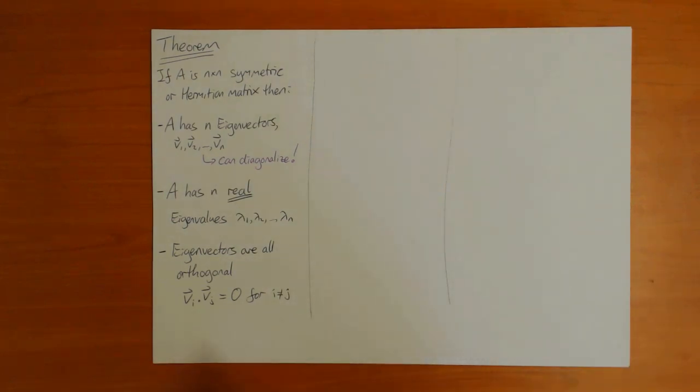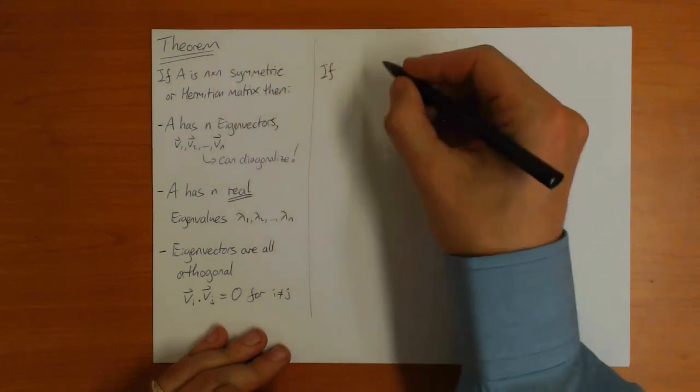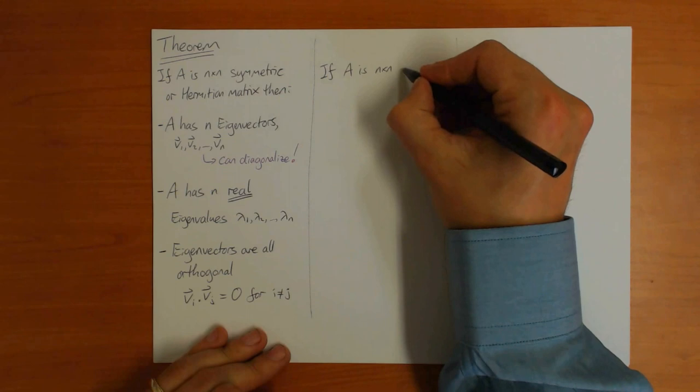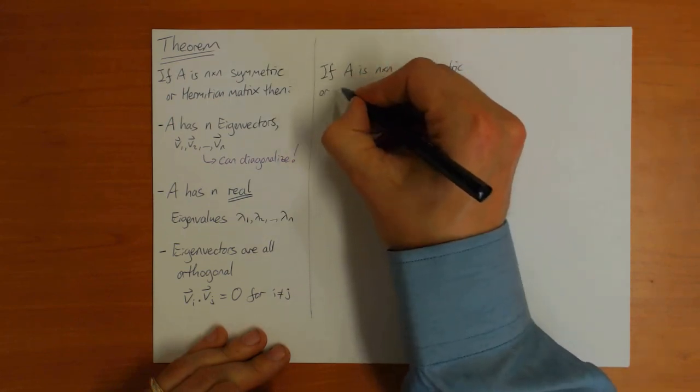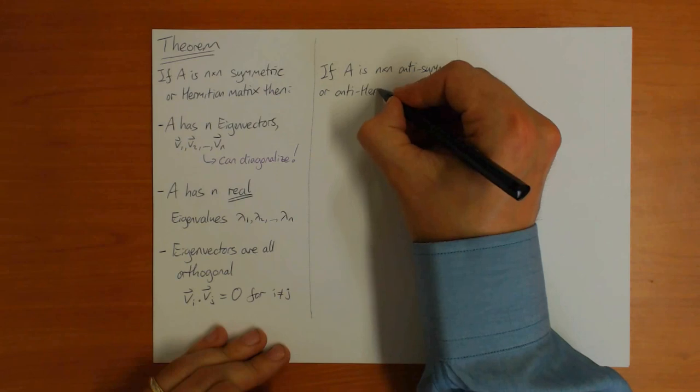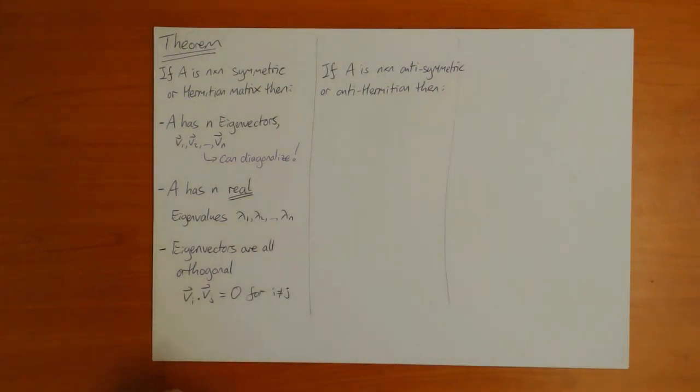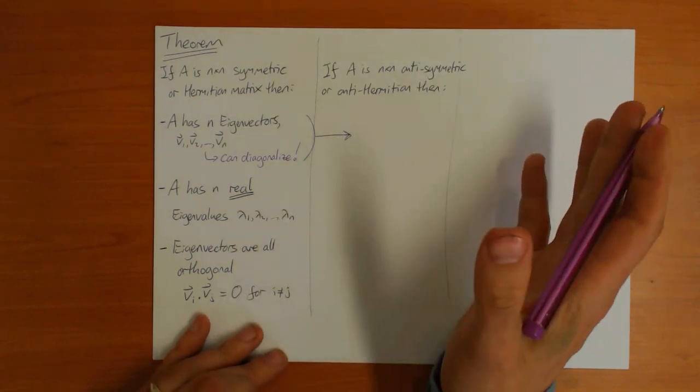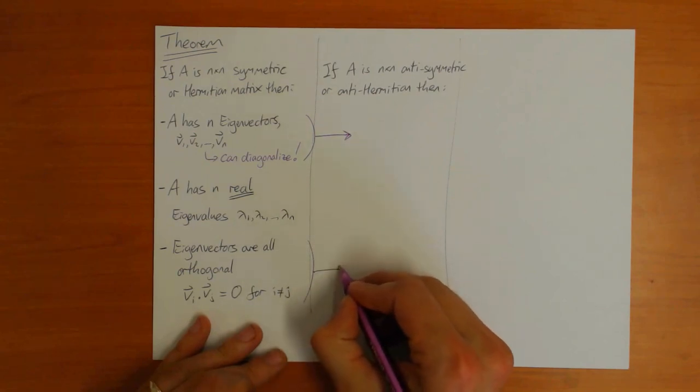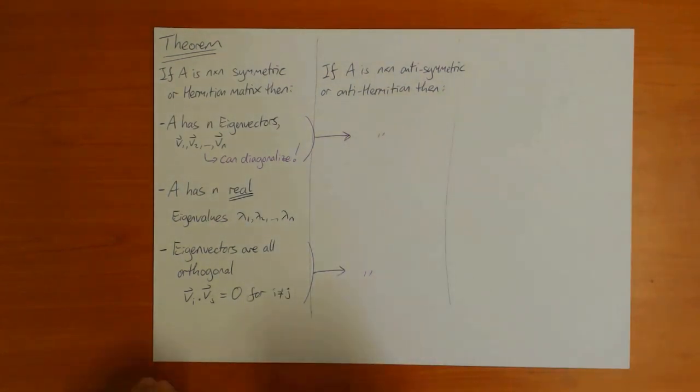I will prove this theorem in the final video this week. Before I do that, I just want to complete it for the other kinds of matrix you can have. The next one is for anti-symmetric and anti-Hermitian. So if A is n by n anti-symmetric or anti-Hermitian, then the first part of the theorem is exactly the same. They will always have n eigenvectors, so n eigenvectors - they are always diagonalizable. And the last part of the theorem is the same. The eigenvectors will always be orthogonal.